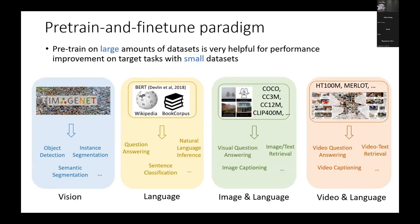Everyone knows that in vision, we can usually train a great model by first pre-training on ImageNet, and then fine-tuning to many small datasets to get great results. Similarly, for language and image-language, people found that pre-training is very helpful to improve model performance. In this field, people are also interested in exploring how to pre-train video and language together.